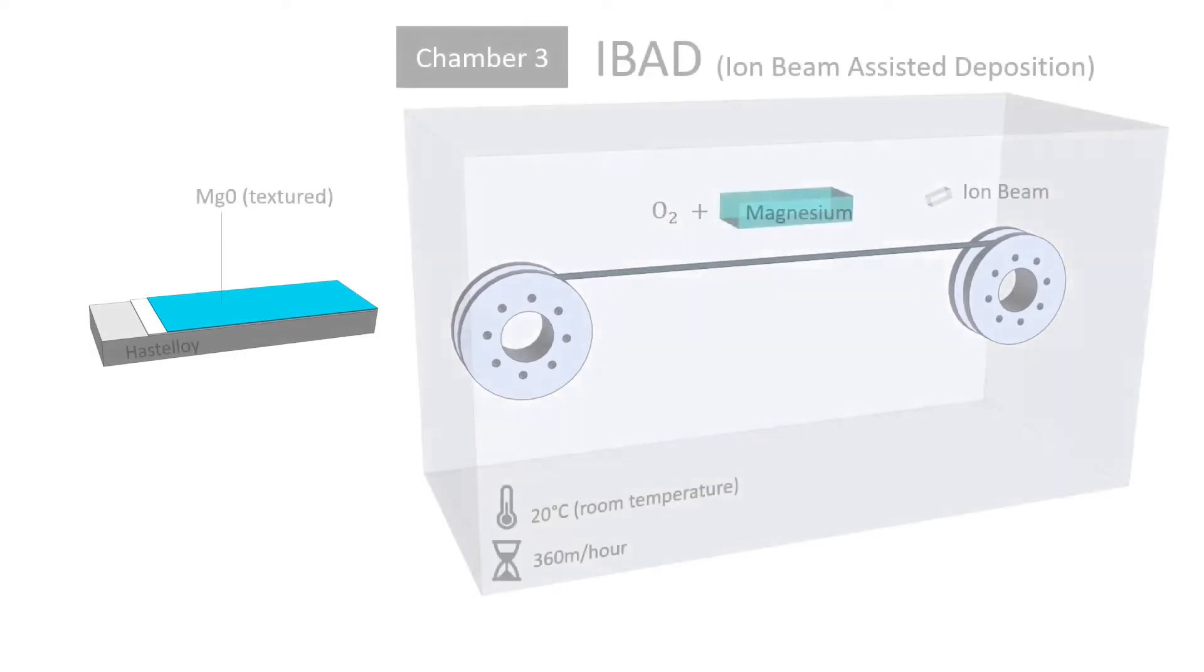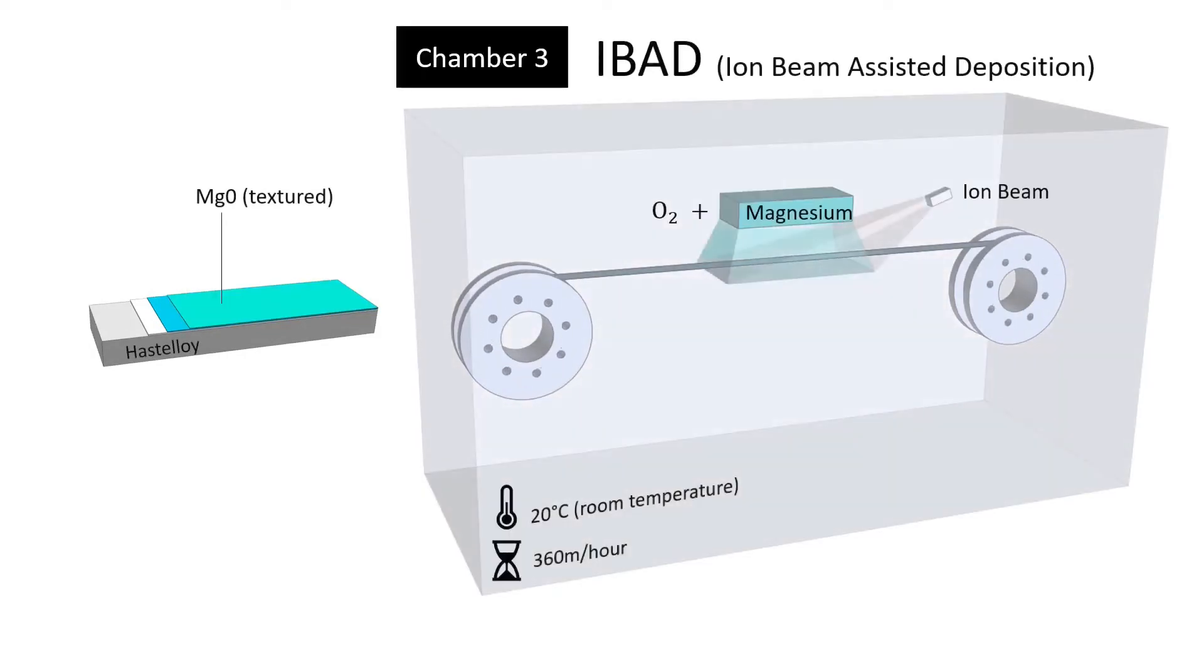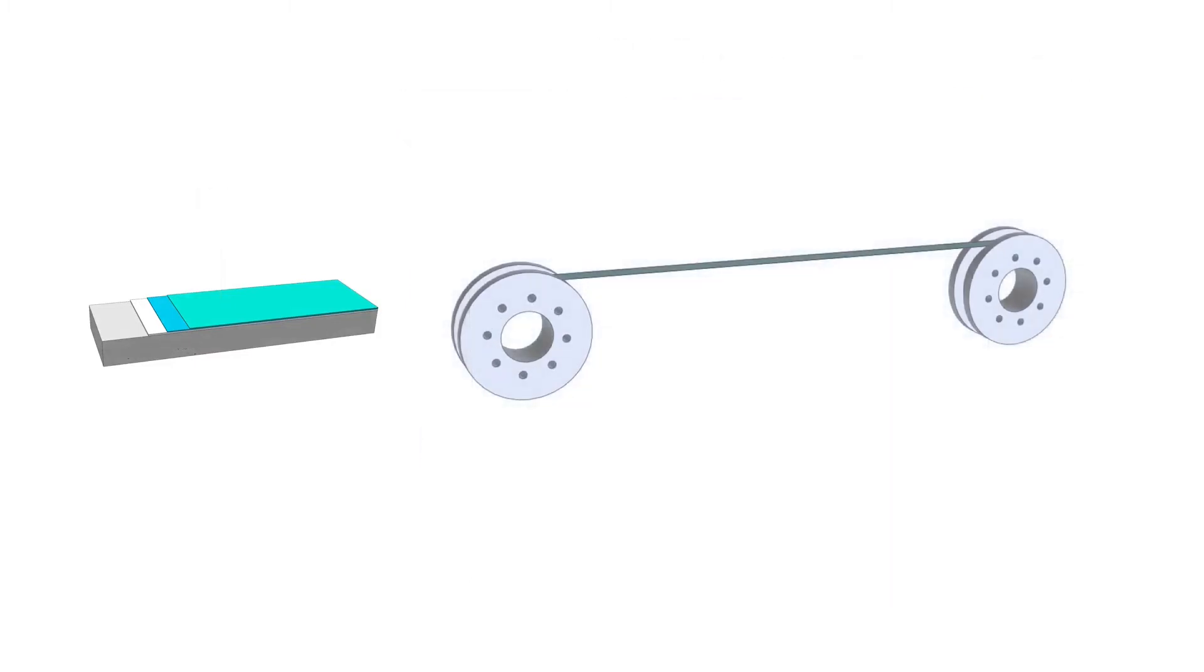After that, in an ion beam-assisted deposition chamber, an epitaxial magnesium oxide layer is deposited. This is the most important layer of the whole process since it guarantees the growth of a single crystal-like HTS layer.